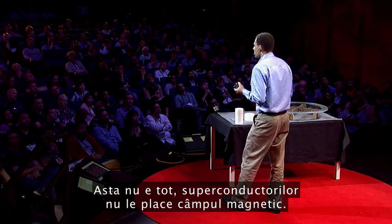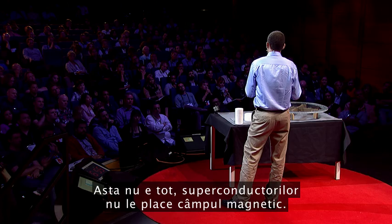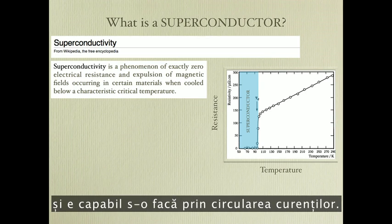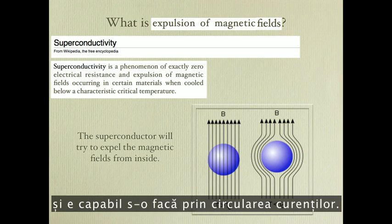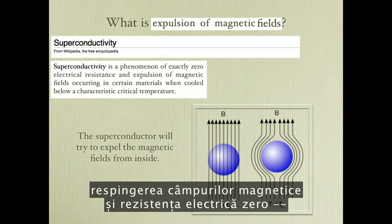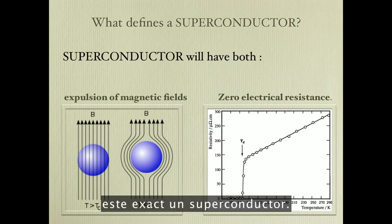But that's not all, because superconductors don't like magnetic fields. So a superconductor will try to expel magnetic fields from the inside. And it has the means to do that by circulating currents. The combination of both effects — the expulsion of magnetic fields and zero electrical resistance — is exactly what defines a superconductor.